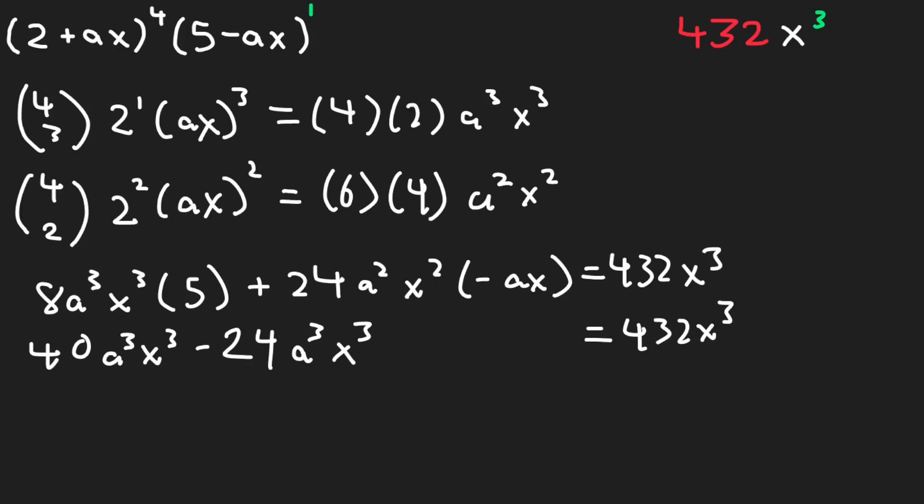So, over here, we have like terms, we have a cubed x cubed and a cubed x cubed. So we can just add 40 to negative 24 to combine the like terms together. 40 minus 24 is 16. So on the left-hand side, I'm going to get 16a cubed times x cubed equals 432x cubed.